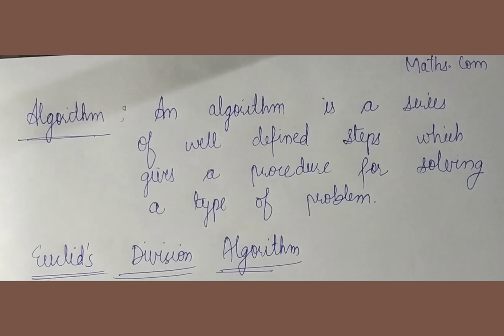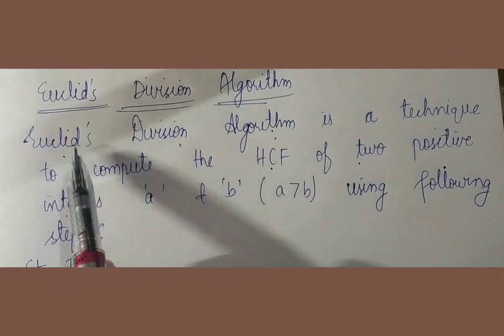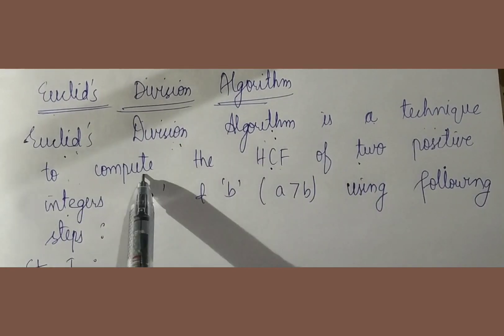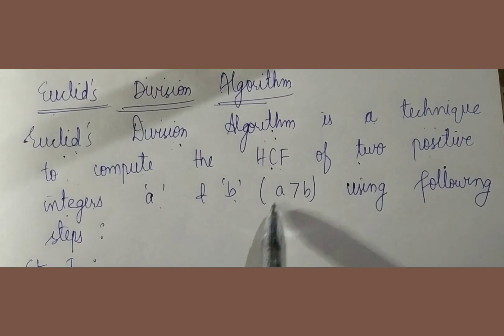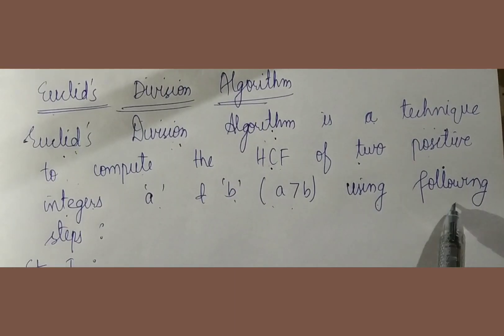Hum start karayenge Euclid's Division Algorithm. Euclid's Division Algorithm is a technique to compute the HCF of two positive integers, a and b, where a is greater than b, using following steps.